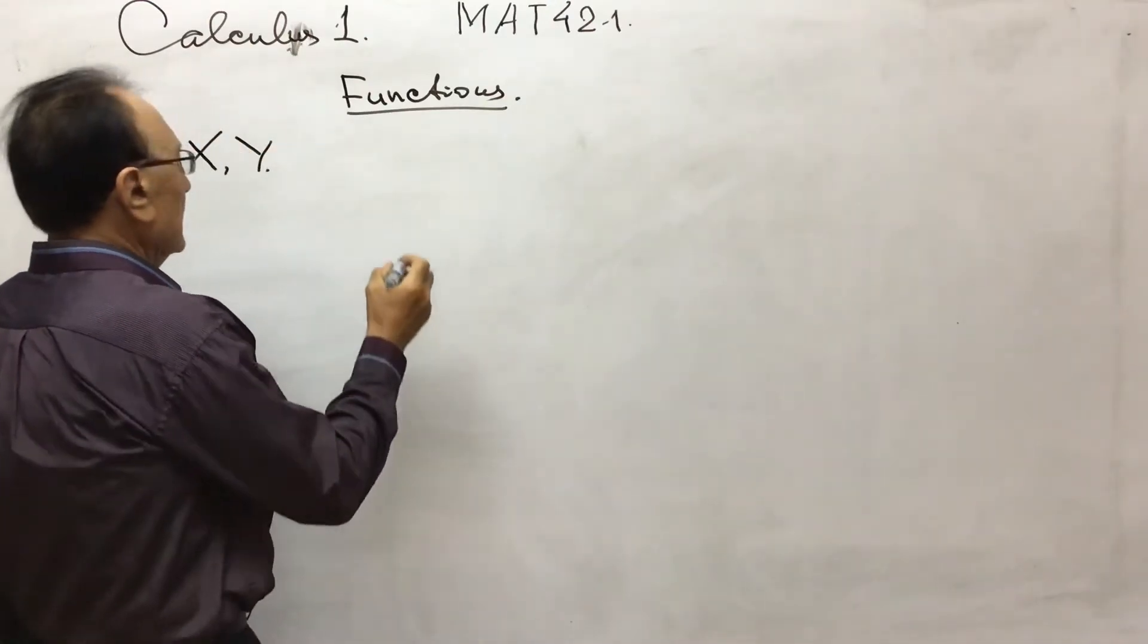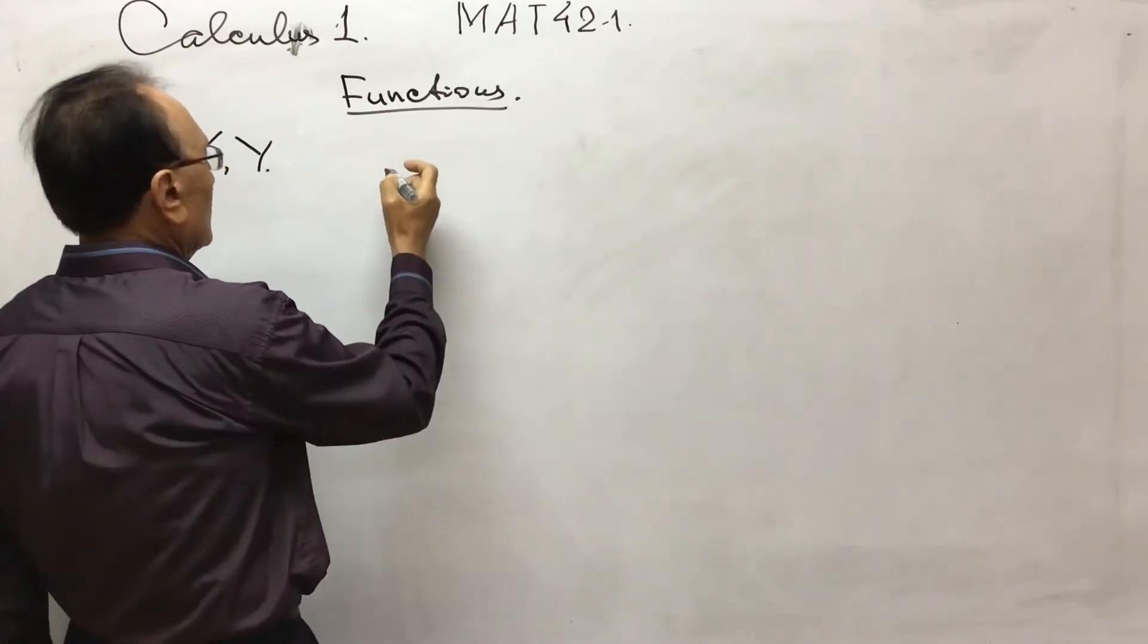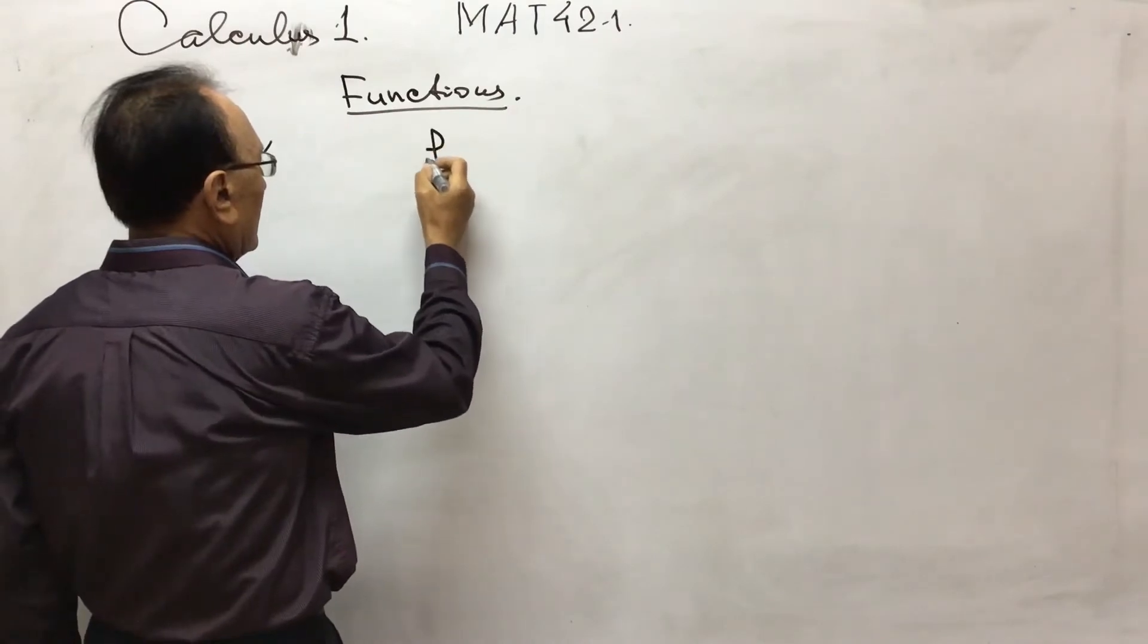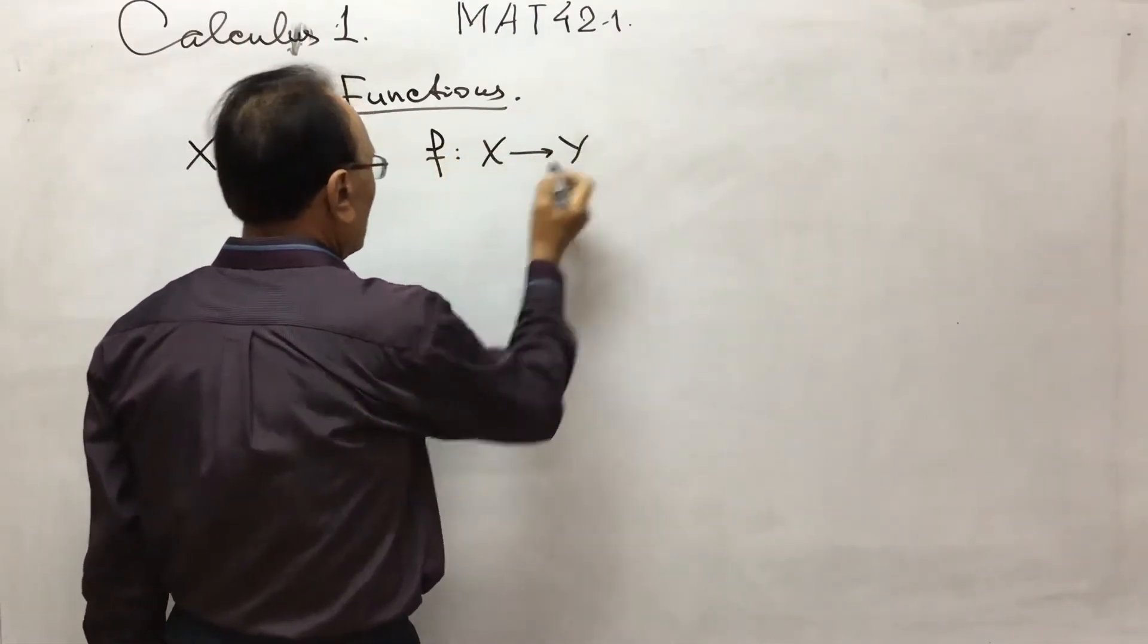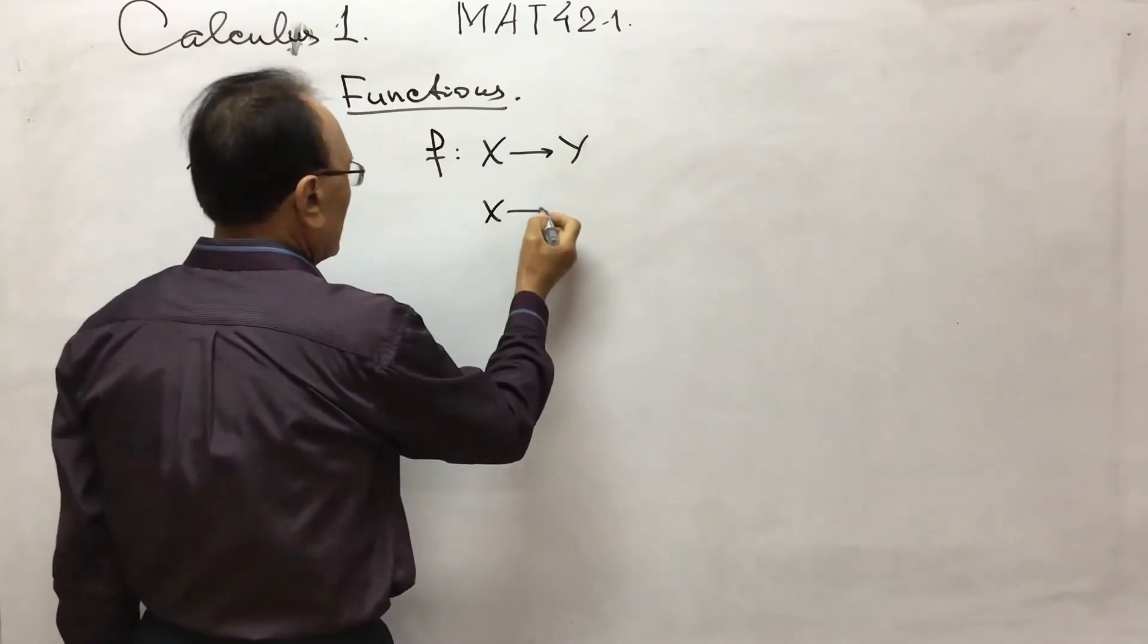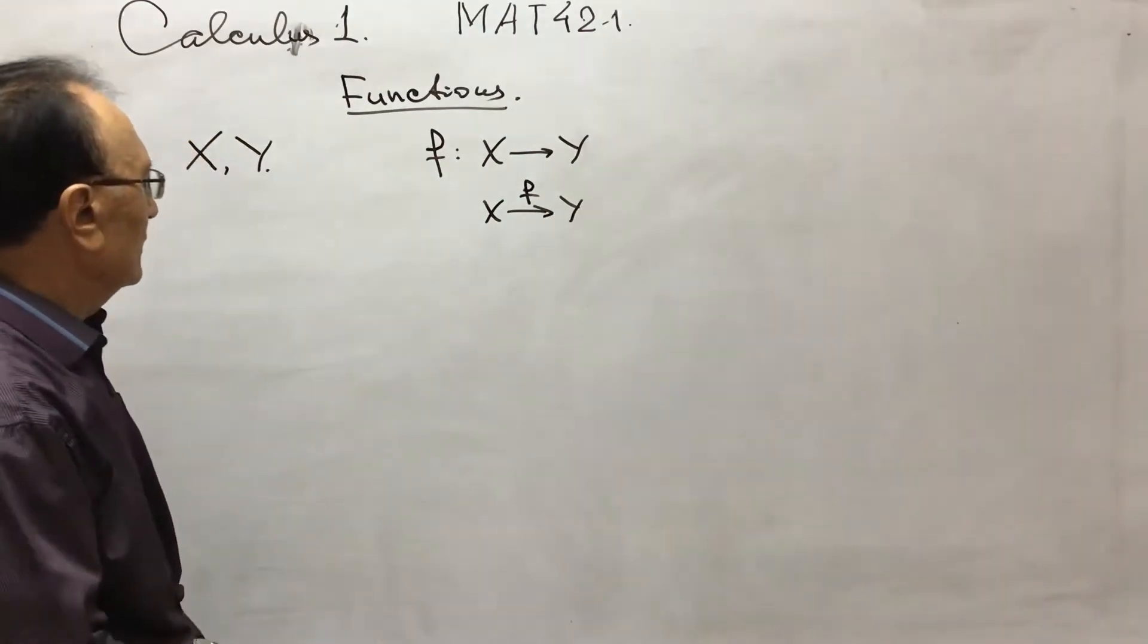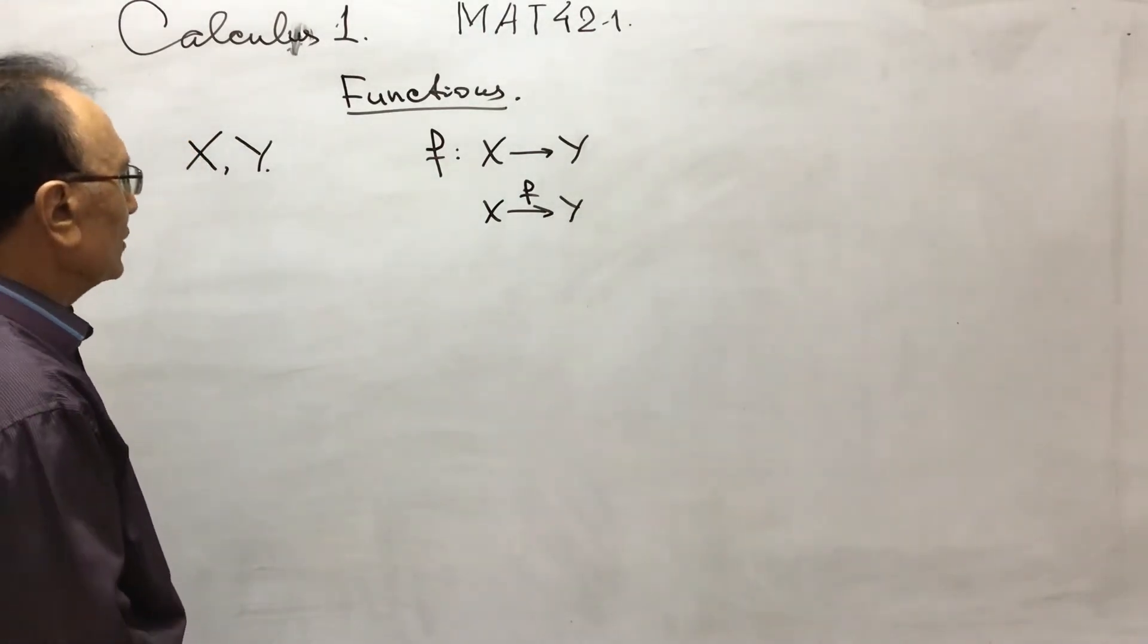And the relation between x and y is given as f: x to y, or x maps to y under f, and such kind of notations. So this is a relation.